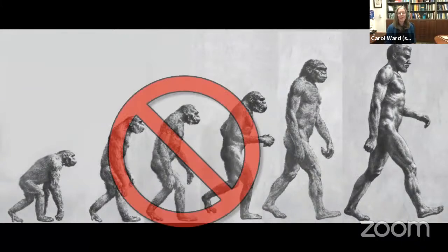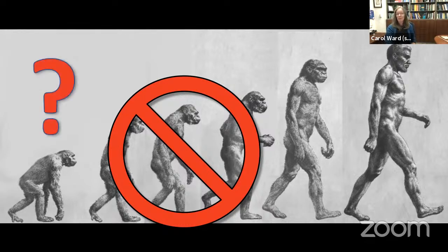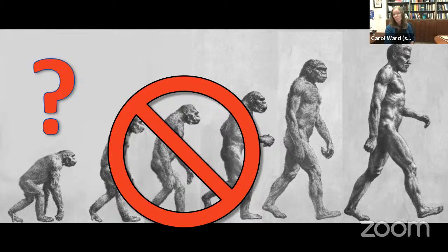So we can cross off this part of the Time Life diagram — it is not correct. The earliest committed bipeds, at least Australopiths, would have been fully upright and moved largely like we do. But what came before Australopiths? Natural selection can only act on last year's model, so if we want to understand how and why we became committed terrestrial bipeds, we need to know the starting point.